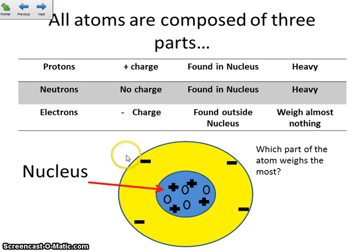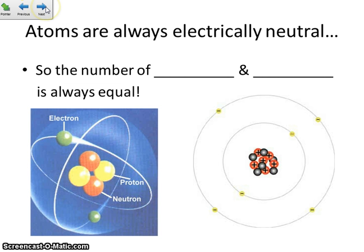Which part of the atom weighs the most? The nucleus or the electron cloud? Hopefully you said the nucleus. The protons and the neutrons are both found in the nucleus, and those are both the heavy parts. The only thing found outside in this electron cloud is the electrons, and they weigh almost nothing. So that electron cloud hardly has any mass in it. All the mass of an atom is found right here in the middle.